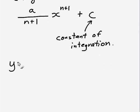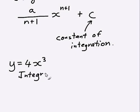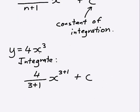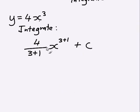So say I have a function y equals 4x to the power 3. If I wanted to integrate this, first up what I'm going to have to do is take the 4 in front of the x and divide it by the power plus 1. So I take the 4 and divide it by 3 plus 1. Then I take the x and increase its power by 1, so the power goes from 3 to 3 plus 1, and I have to add in this constant of integration.